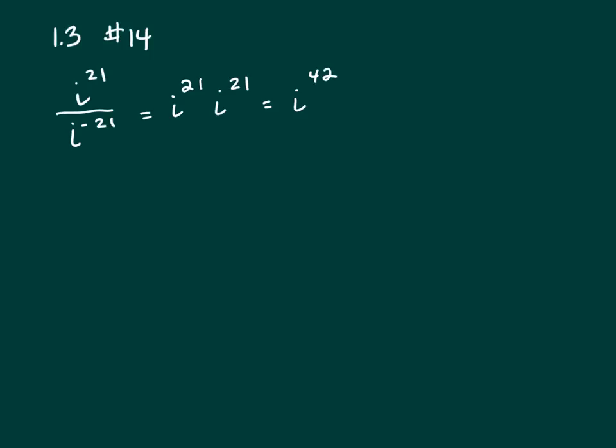And what you want to do, you always take the number 4, and it's because i to the 4 equals 1. You take the number 4 and you divide it into 42.